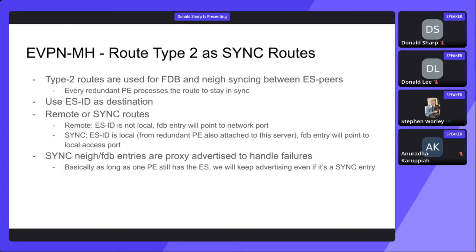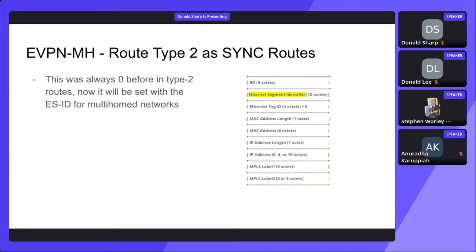One interesting optimization is that we can use sync neighbor and FDB entries to proxy-advertise failures. If our redundant peer fails before it's able to withdraw the route, we don't need to actually withdraw it because we can use the same Ethernet segment that we've installed as a sync. Even though it didn't originate the type 2, we know it's connected to the exact same Ethernet segment, so theoretically they are supposed to be there. We trust this sync and keep advertising it. This is what the packet actually looks like — before, this portion would always be zero, but now we carry it with the ID.